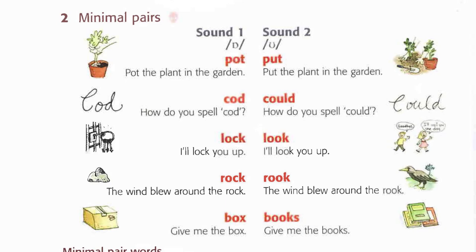2D: Pot the plant in the garden. Give me the books. The wind blew around the rock. How do you spell could? I'll look you up.